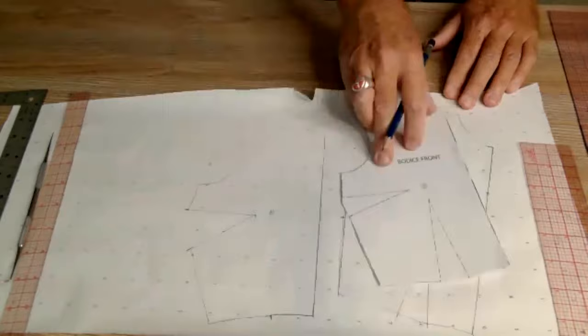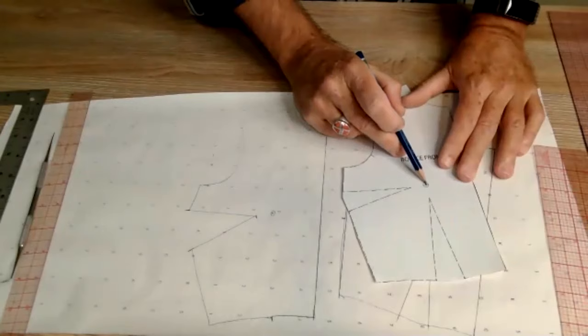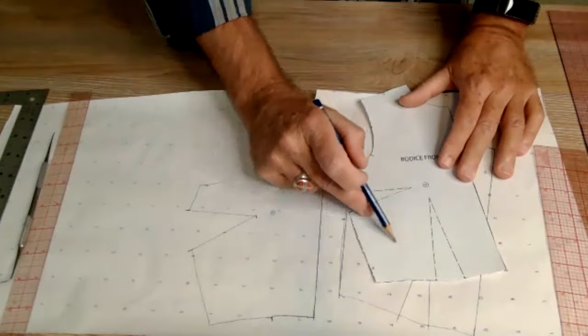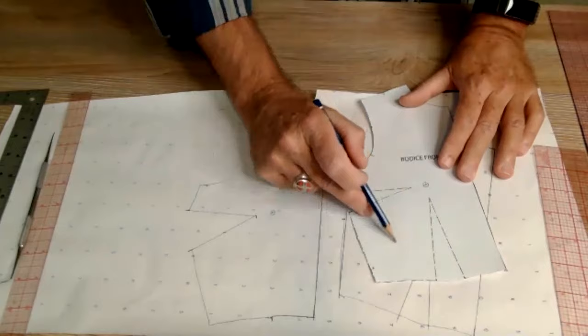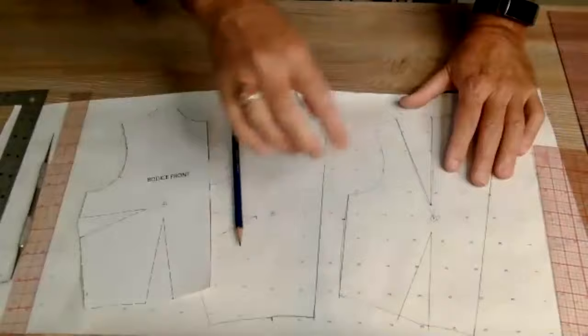Say we want to do a French dart, and the French dart would be coming from basically the center down to about here. The French dart is a long dart that's really on the bias so it just sort of forms into the body, forms into that curve.